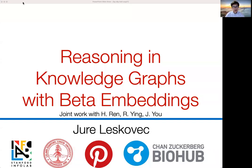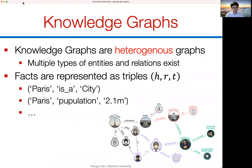Thank you very much for the invitation to speak at this exciting workshop. Today I'm going to talk about reasoning in knowledge graphs with beta embeddings. A knowledge graph is simply a heterogeneous graph where we have multiple types of entities and relations, and we can think of links relating entities as triples that represent facts known in the world.